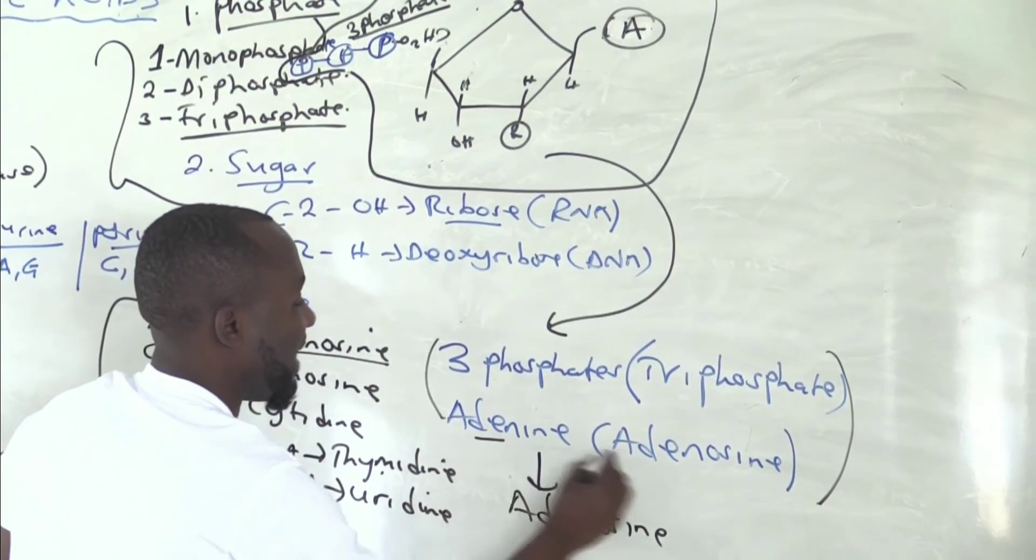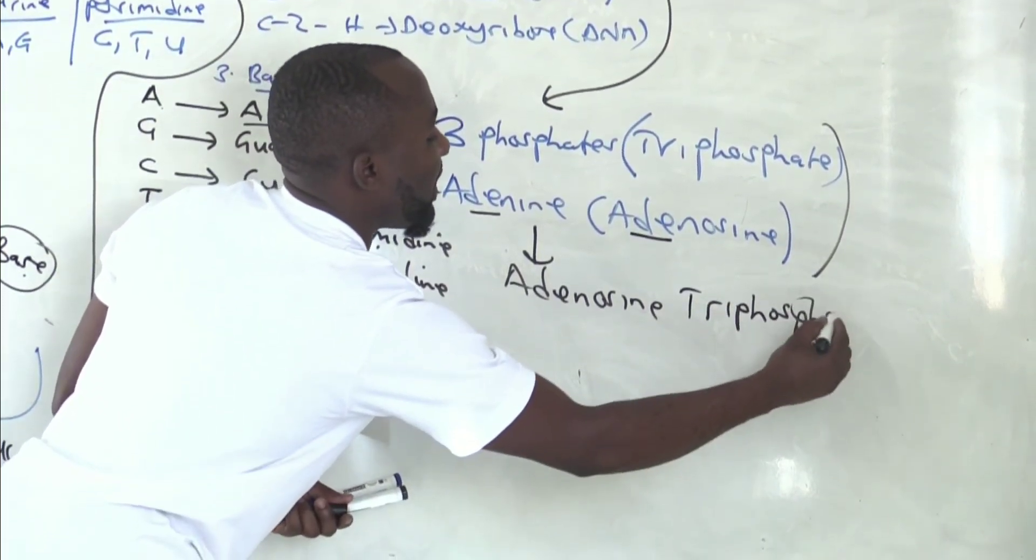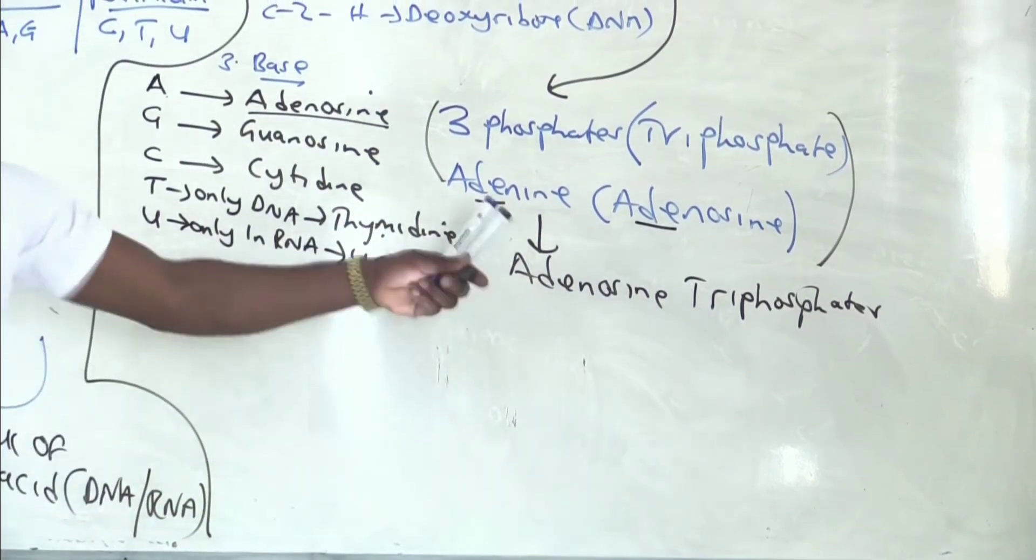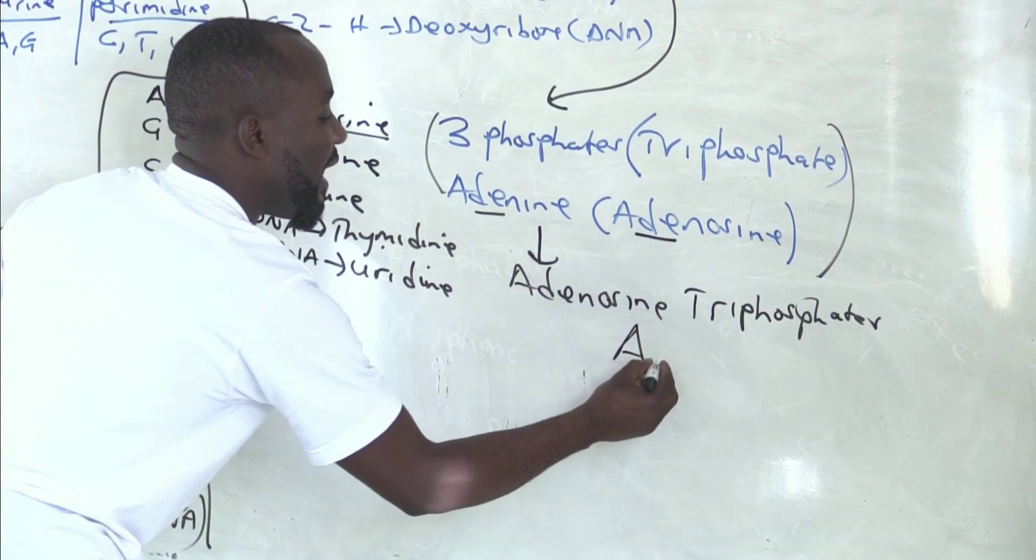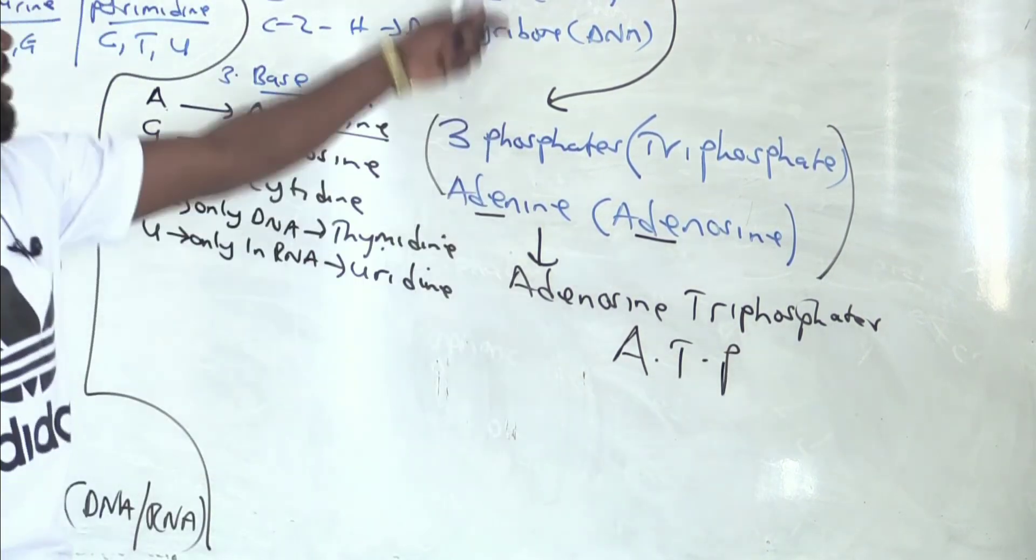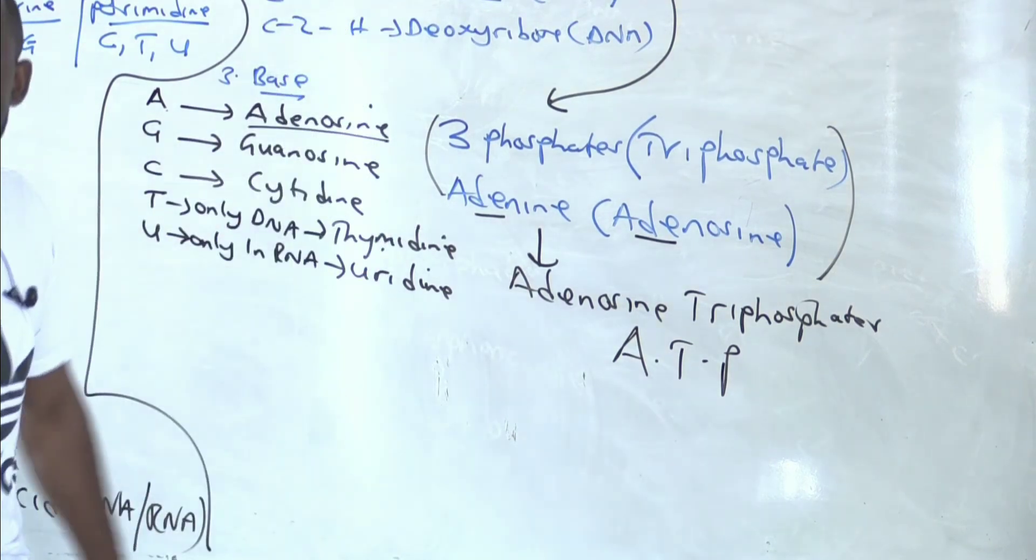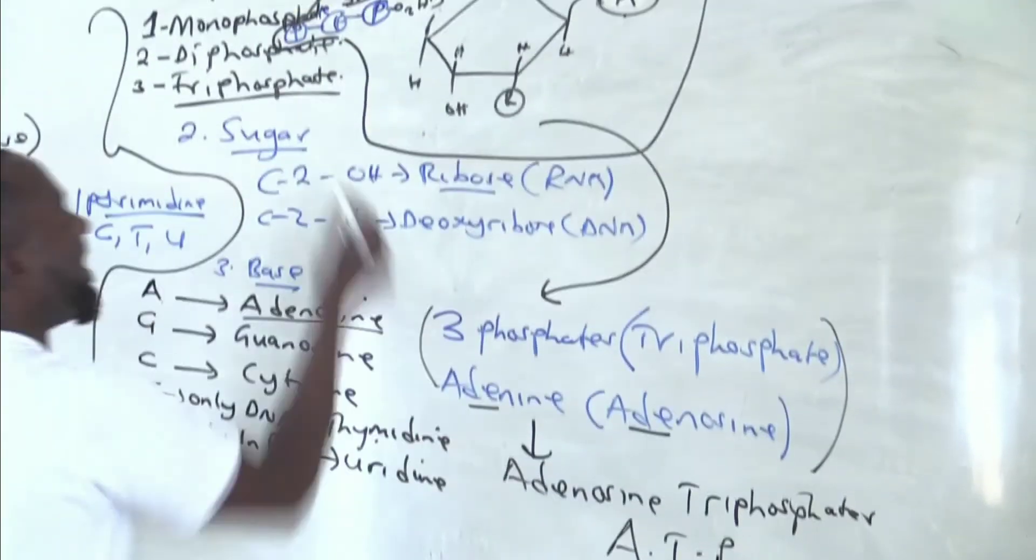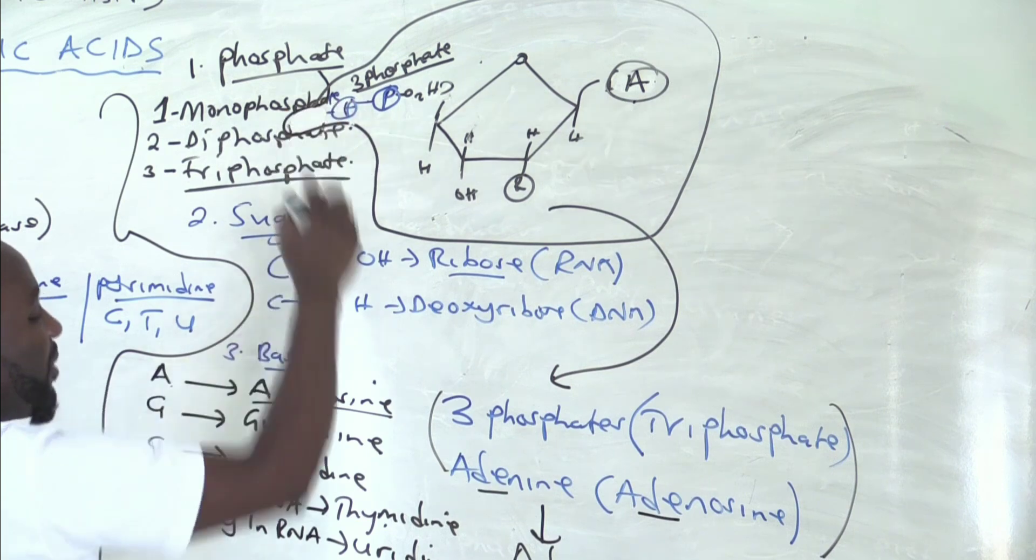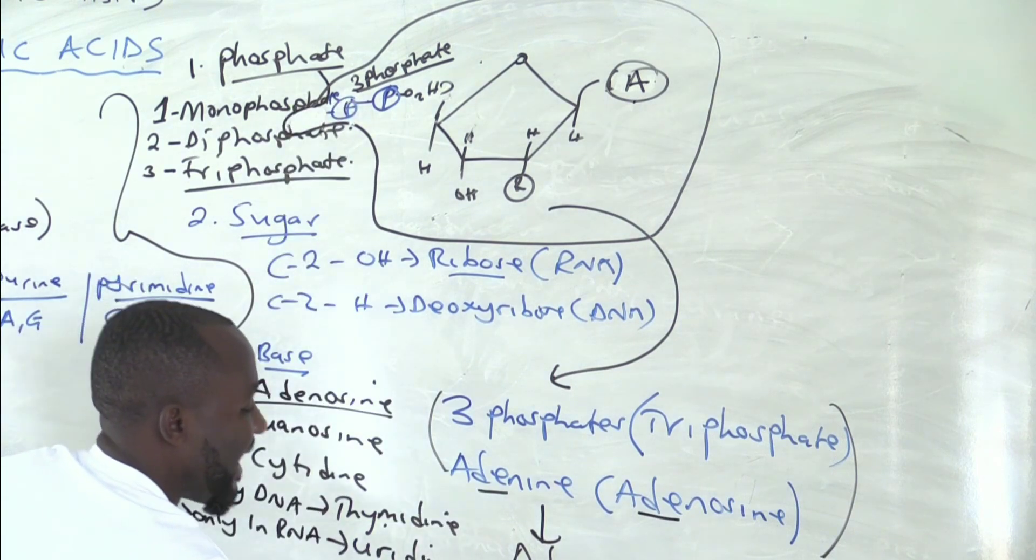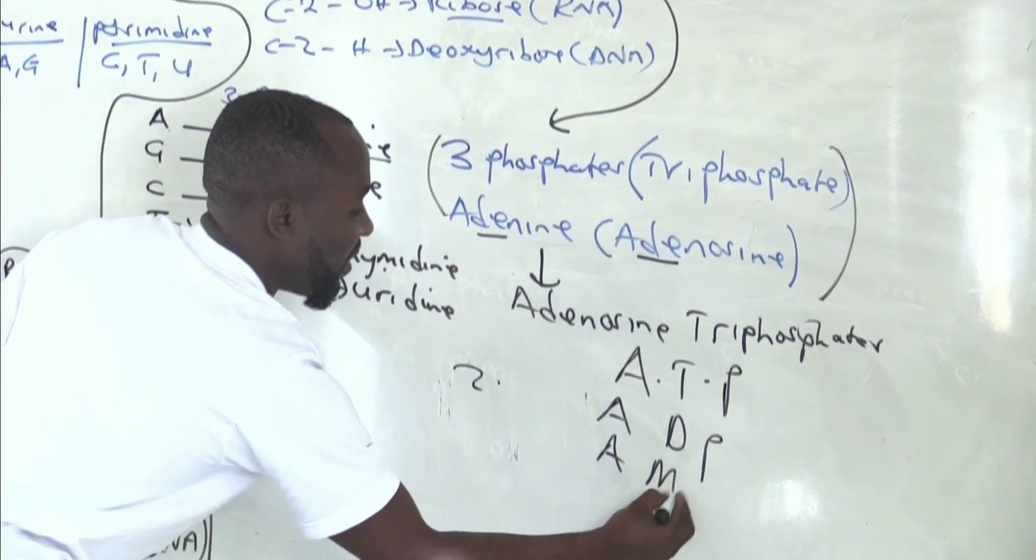Because it is adenine becomes adenosine, then because there are three phosphates, triphosphate. Who can tell me what is the short form of adenosine triphosphate? That is the one we call ATP. So the structure you are seeing on the board is the structure of ATP, adenosine triphosphate, because there is adenine attached and it has three phosphates. What happens when you remove one phosphate? There it becomes two. When you have two phosphates, it's adenosine diphosphate. One phosphate, adenosine monophosphate.